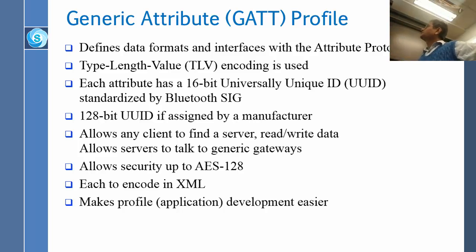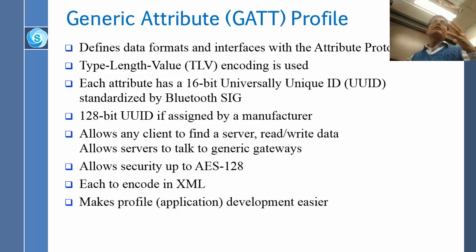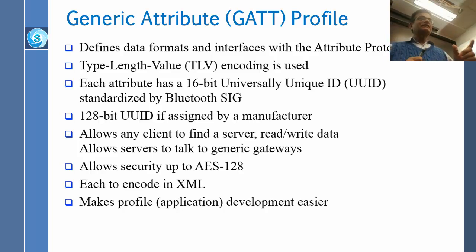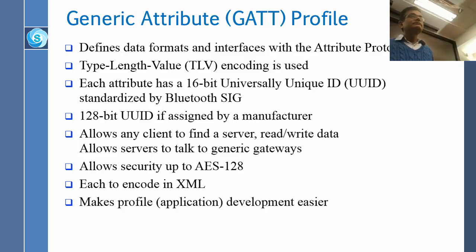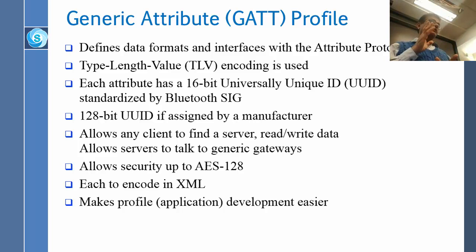GATT is used to define the data formats and interfaces with the attribute protocol. The data formats are defined in type, length, and value — TLV. So everything is defined as what type it is, how much is the length, and what is its value. Each attribute has a 16-bit universally unique ID, UUID, standardized by Bluetooth SIG. Even though the attributes have become very numerous, there can be no more than two raised to the power of 16 attributes.